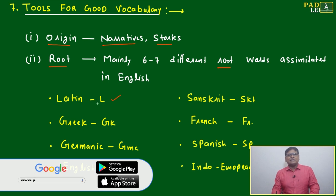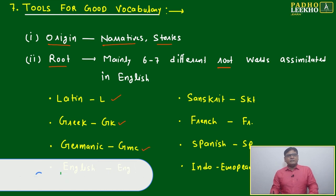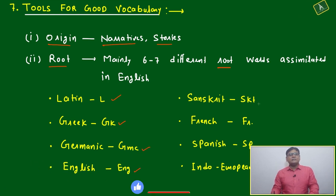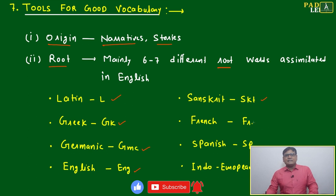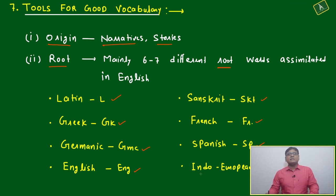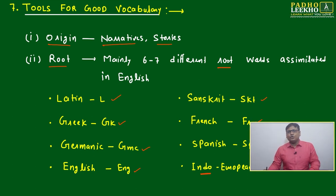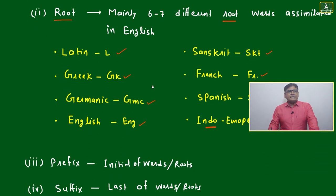GK means Greek, GMC Germanic, ENG English, SKT Sanskrit, FR French, SP Spanish. If it is not categorized in any of these, then you can say broad family language, IE Indo-European. These eight roots are there.